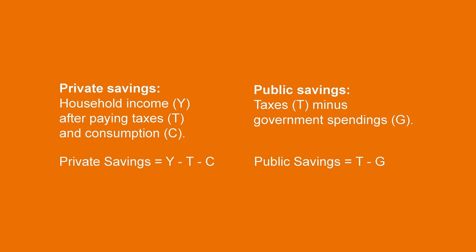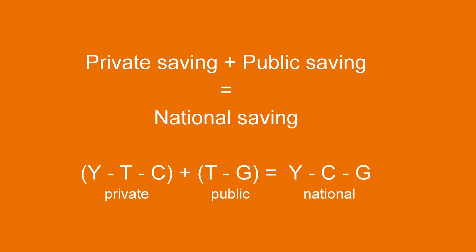The government also can save. Public savings are the difference between the income of the government — that is, the taxes that are received — and its expenditures. The government's expenditures include, for instance, spendings on education, healthcare, or welfare benefits. When we sum the private savings of households and the public savings of the government, we obtain the national savings. Taxes cancel out when we open the brackets. Thus, national savings are equal to all income minus consumption and minus government spending.